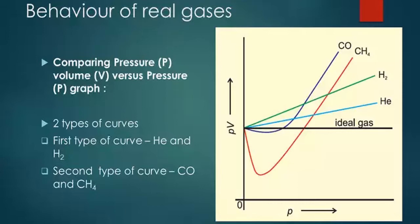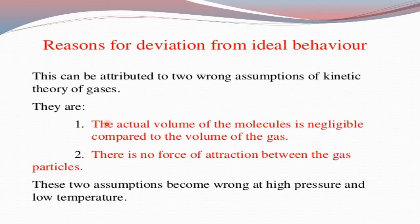Why do real gases show deviation from ideality? It is because two assumptions made in the kinetic molecular theory of gases are incorrect. Because of these two faulty assumptions in the kinetic molecular theory, we get deviations from ideality in real gases. The first faulty assumption is that the actual volume of the molecules is negligible compared to the volume of the gas — this holds for an ideal gas.